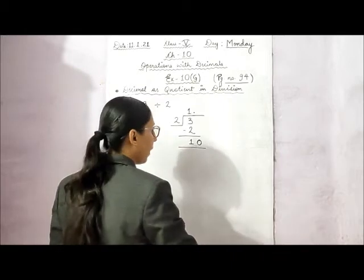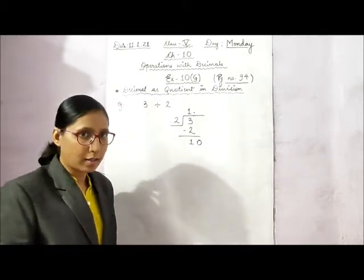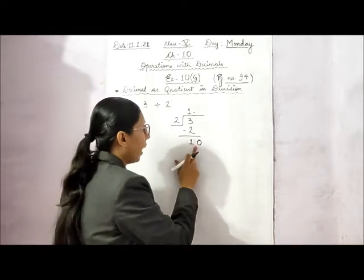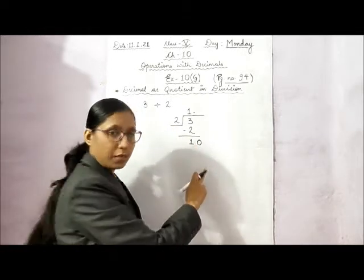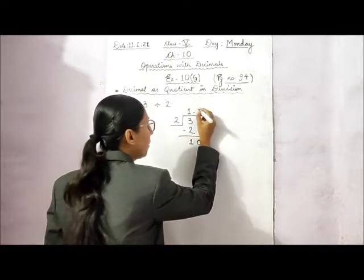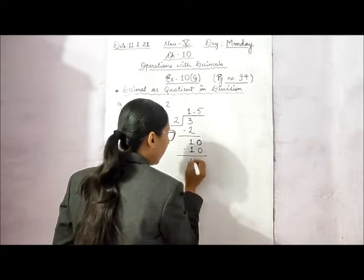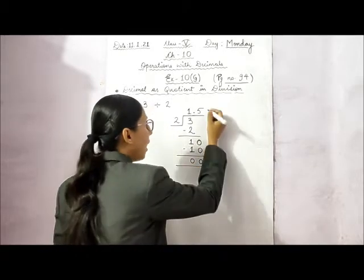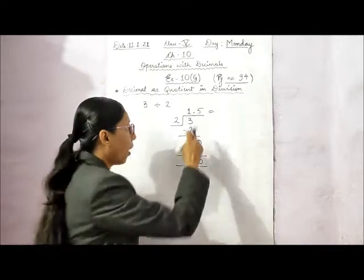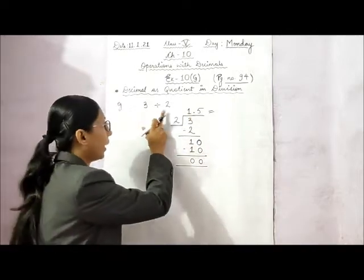The quotient is showing 1 only, but we can convert it to decimal. If we write a decimal point here, this decimal point will allow us to write a 0 in the remainder. Whatever remainder comes, we can add a 0 to it. Now 2 and 10 are both divisible, and in the table of 2, 10 comes 5 times. So the remainder will be 0 and the answer will be a decimal number.